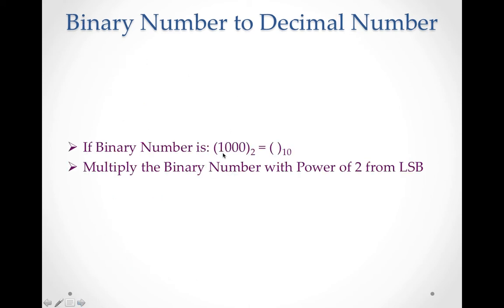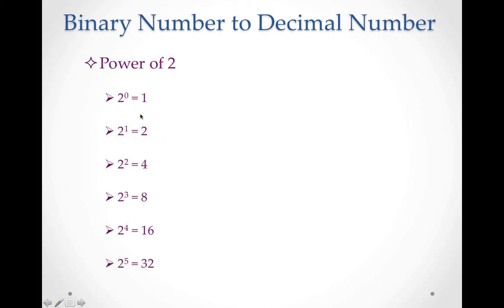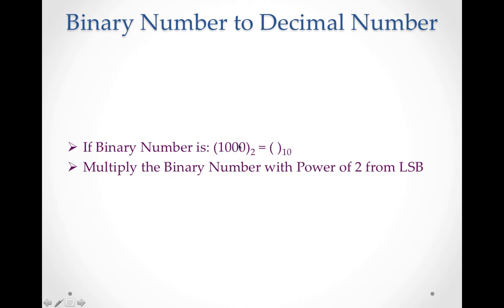If you want to convert 1000 (base 2) to base 10, multiply the binary digits by the power of 2. The rightmost bit is the LSB (Least Significant Bit) and the leftmost bit is the MSB (Most Significant Bit). Start assigning powers from the LSB: 2⁰, 2¹, 2², 2³.